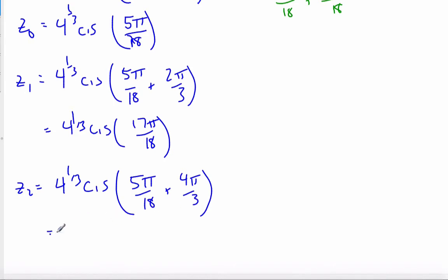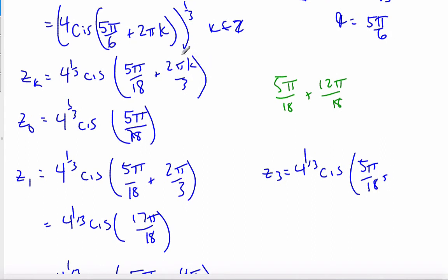5π/18 plus 4^(1/3) cis, well, I make my k value 2 this time, which will give me 4π/3. Now if I add those together, working with the fractions, I know that I'm going to get 29π/18. And I can keep on going in this order. If I do now z_3, well, it's going to be 4^(1/3) cis(5π/18 + 2π).